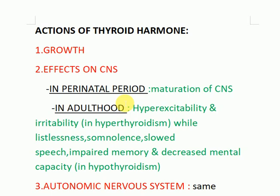In adulthood, hyperthyroidism causes hyper-excitability and irritability, while hypothyroidism causes listlessness, somnolence, slowed speech, impaired memory, and decreased mental capacity.